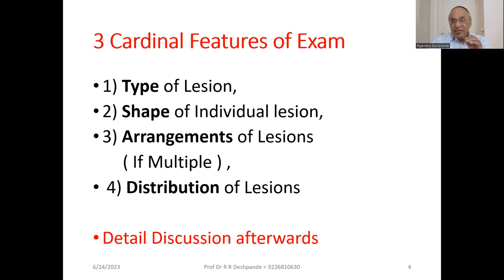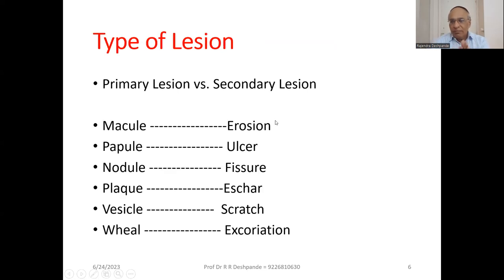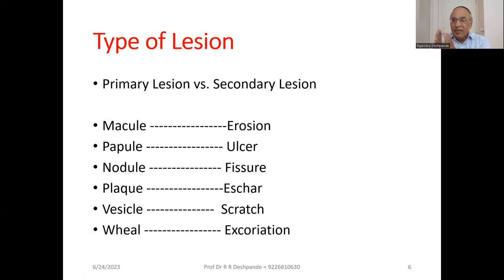Characteristics of individual lesions — note the features of the individual lesion. There are basically two types of lesions. One is called primary lesions and the other is called secondary lesions.